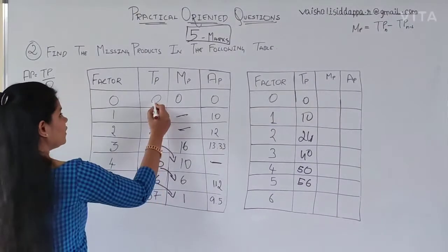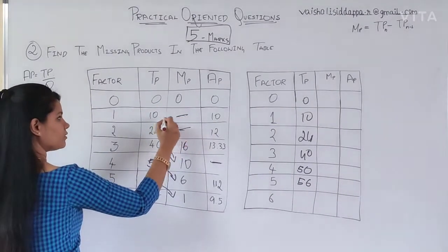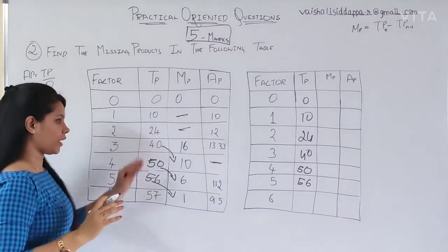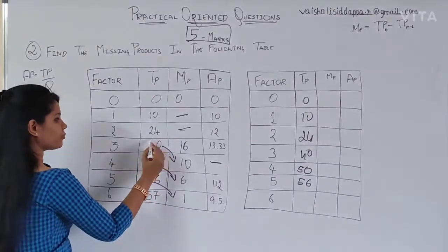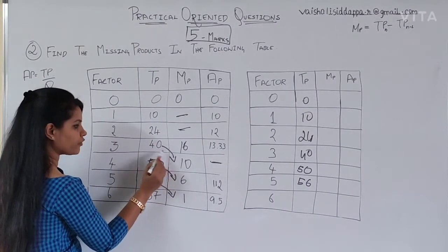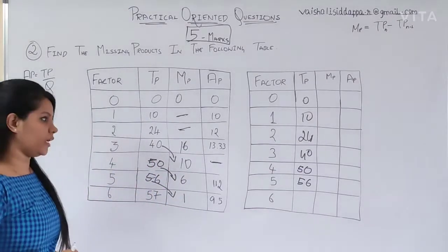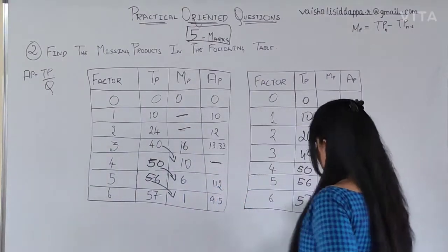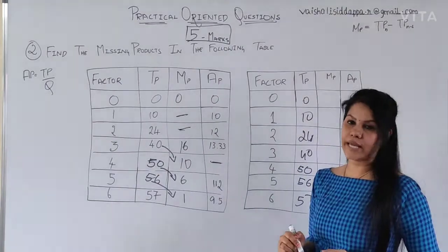So now, 56 plus 1 is nothing but 57. Is it clear? So nothing you have here. So that means this is also 10. You got to know how you are going to find out. From this one, the next MP, what you have from that, you have to keep adding here. Then you will get exact TP. So now, this is the last one, it's 57, what you already written.